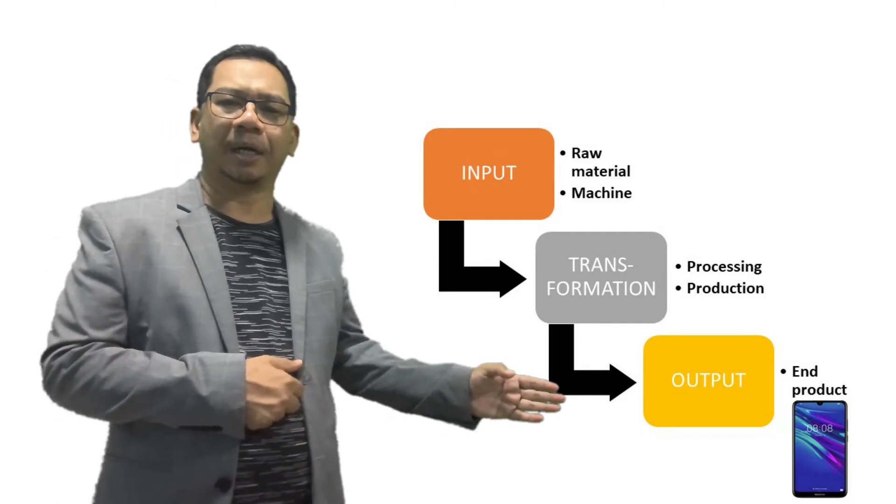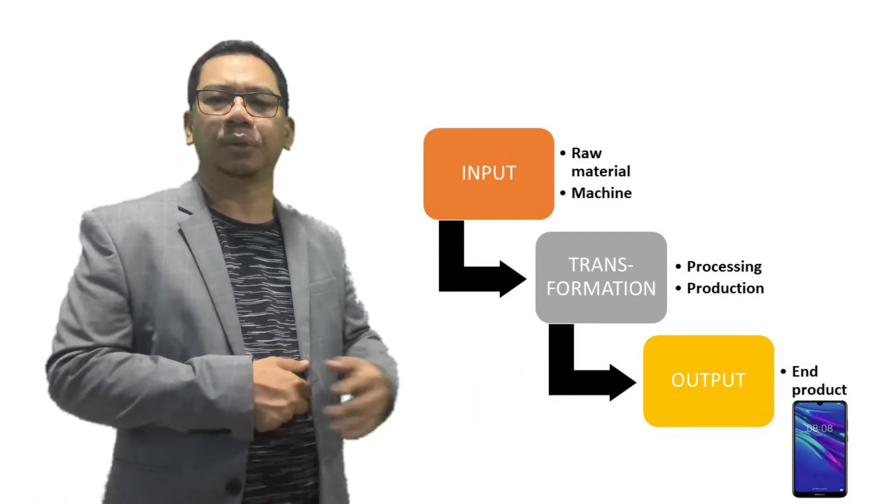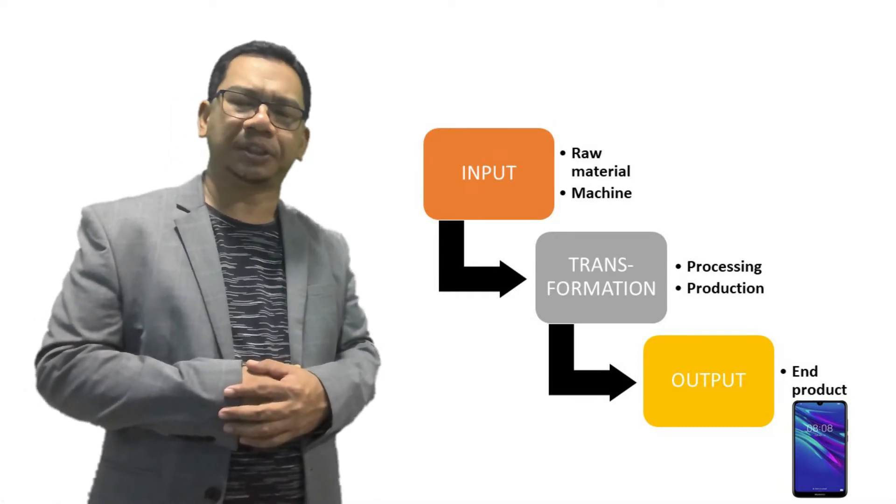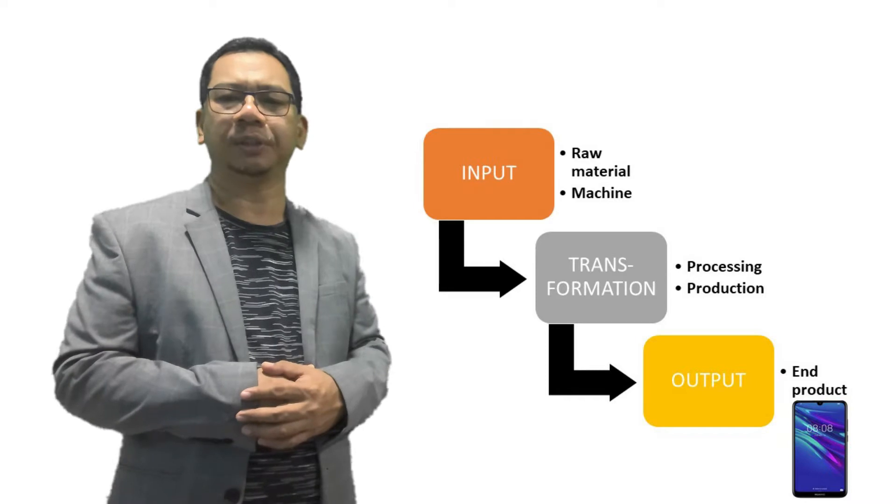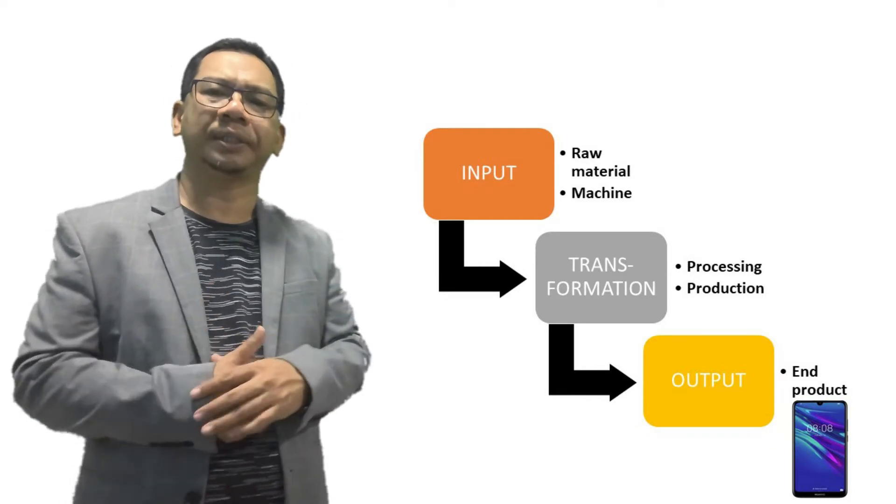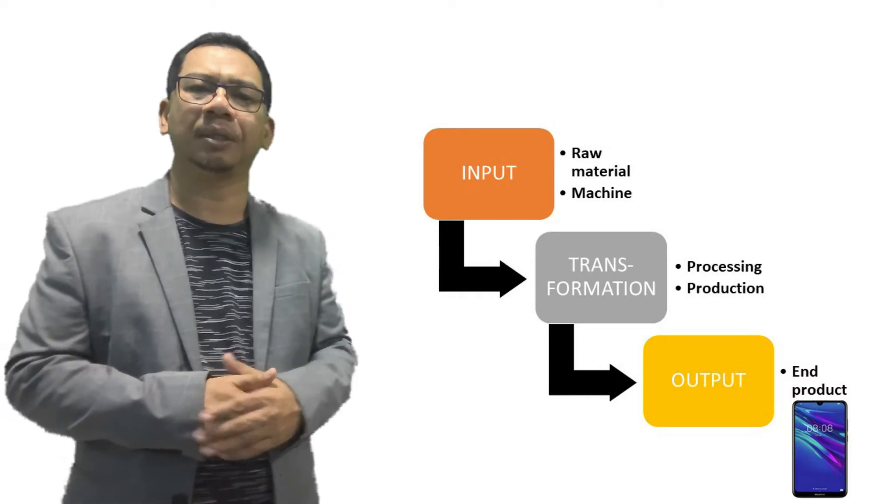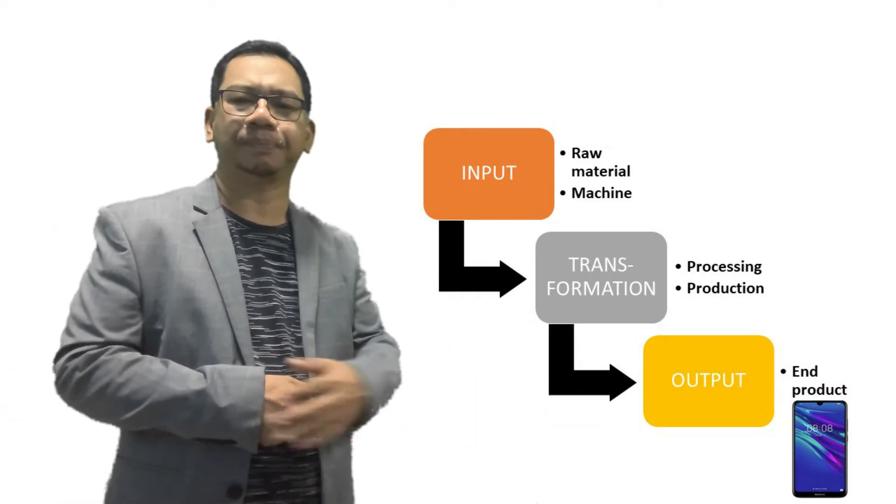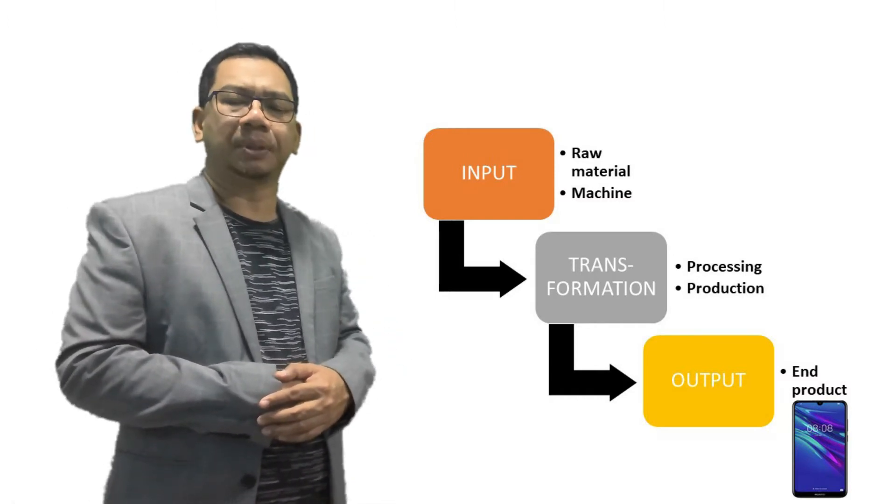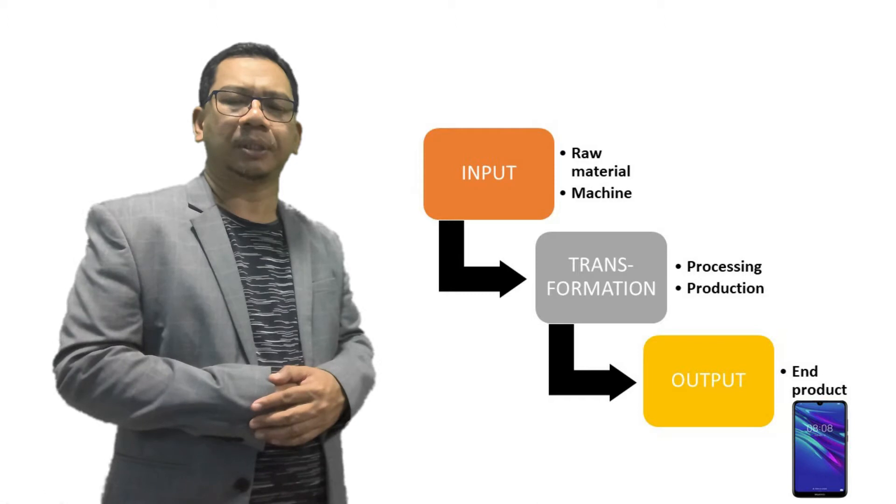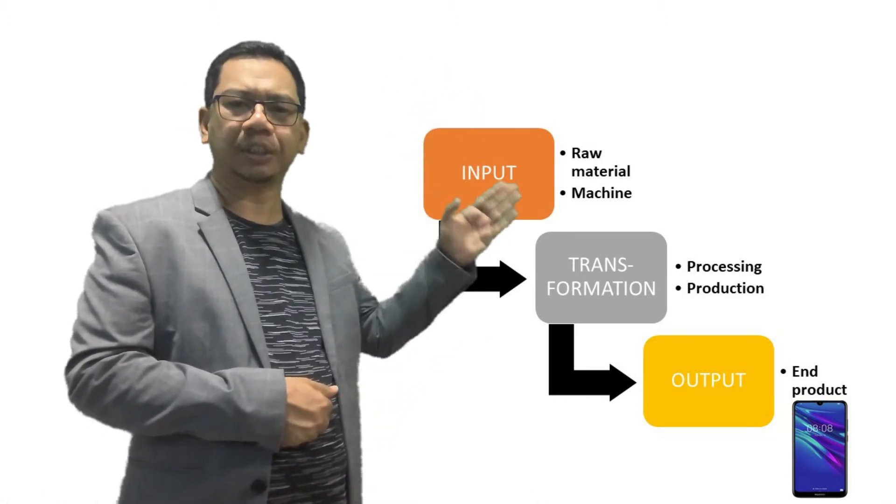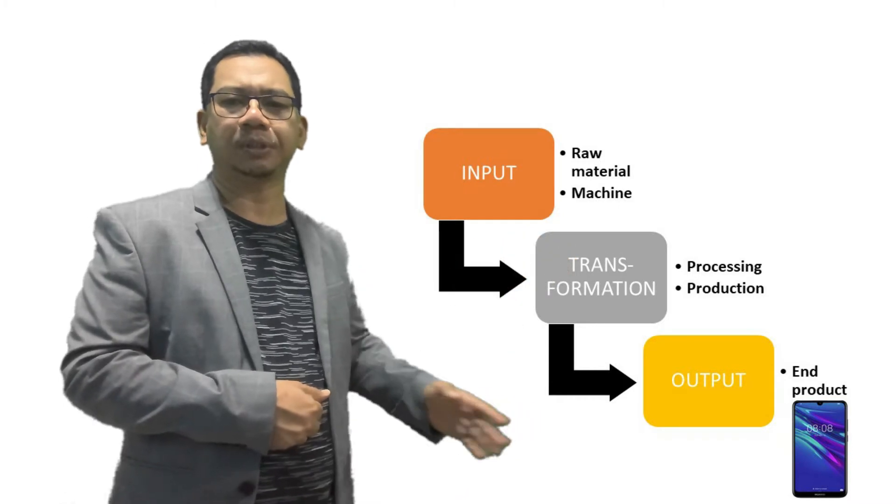For end product, the last stage, we have to manage the delivery issues. Issues related to the channel of distribution, inventory, and also the quality. So, those are the common issues that we have to deal in the later stage. Those are the examples of activities ranging from input stage, the transformation stage, and also the output stage.